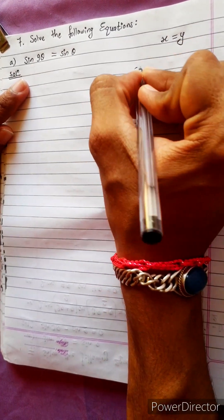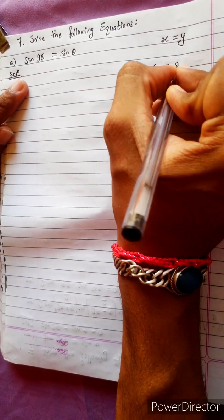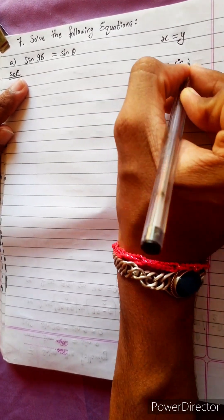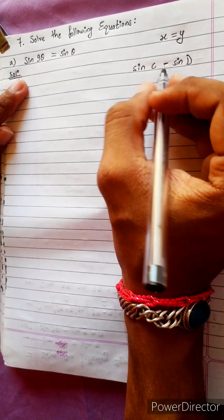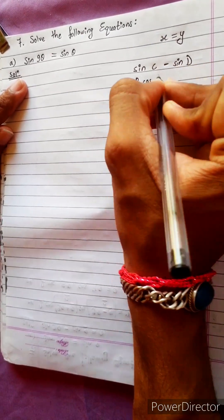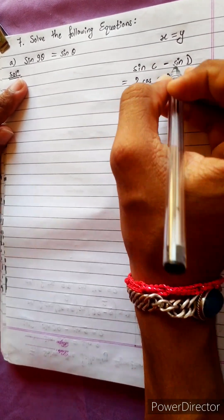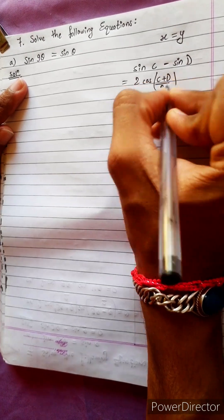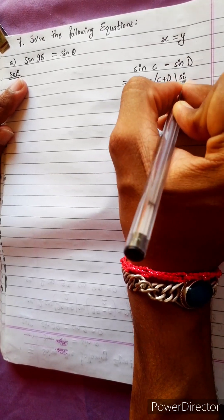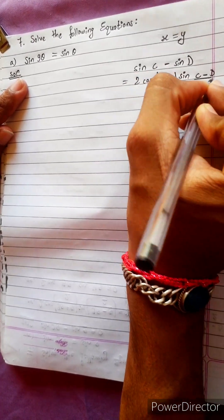This is the formula: sin C minus sin D equals 2 cos((C plus D) by 2) into sin((C minus D) by 2).